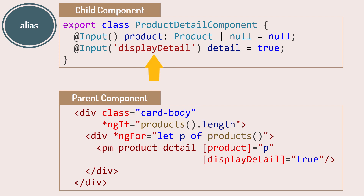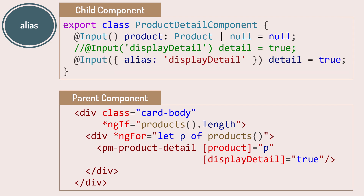This alias syntax is actually a shortcut — the long form passes an object into the input decorator and sets the alias property. Use the short form if the alias is the only option you need. Use the longer form if you plan to use other input decorator options.